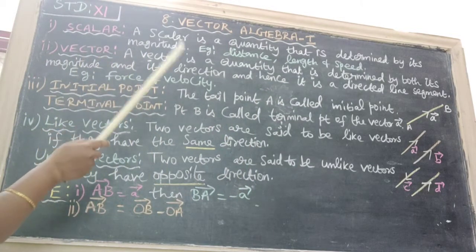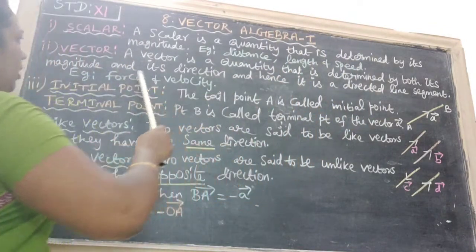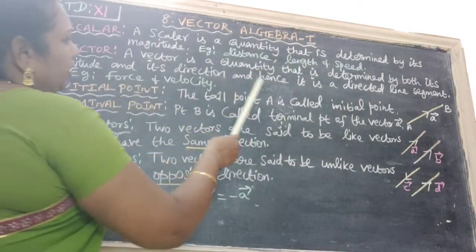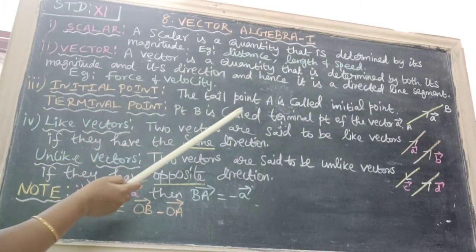Next one is vector. A vector is a quantity that is determined by both its magnitude and its direction and hence it is a directed line segment. For example, force and velocity.